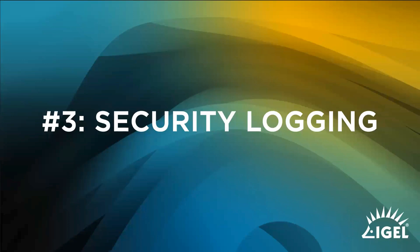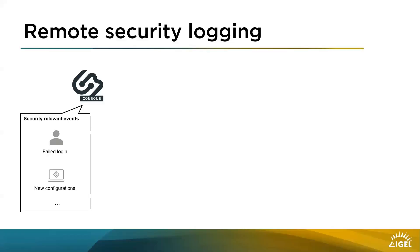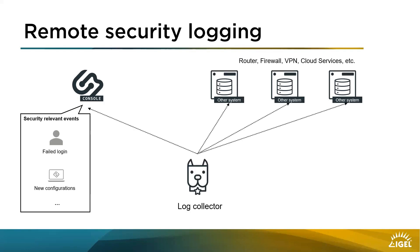Our third feature is security logging. The first part of the feature is that we log security-relevant events in the UMS console. For example, if a user tries to log in and fails, this is logged. If an admin configures a profile and assigns it to a device, this is logged. All security-relevant events are now stored in a log file. If you use a log collector like Graylog, you can access this log file and combine it with security logs from other systems like routers, firewalls, and VPNs to have all security-important information in one place.